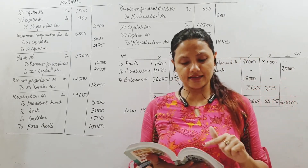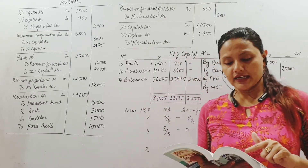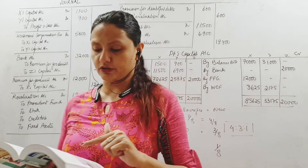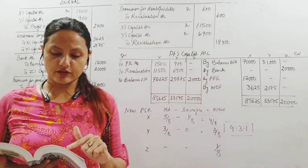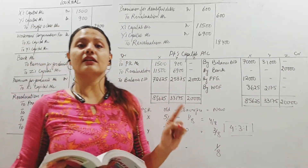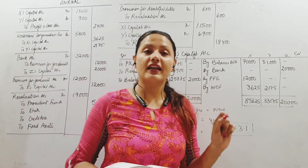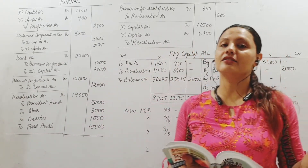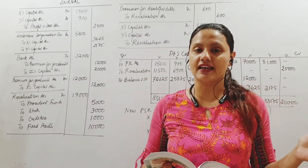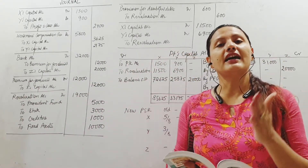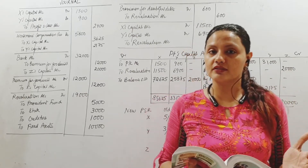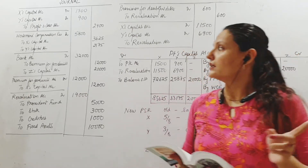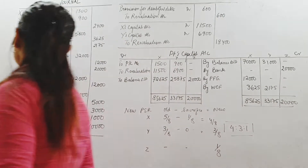On the asset side, we can see cash at bank, sundry debtors, provision, stock, fixed assets and profit and loss account. The profit and loss account is an unwritten off loss. So we will have to distribute the accumulated losses also. So two entries come from the balance sheet.